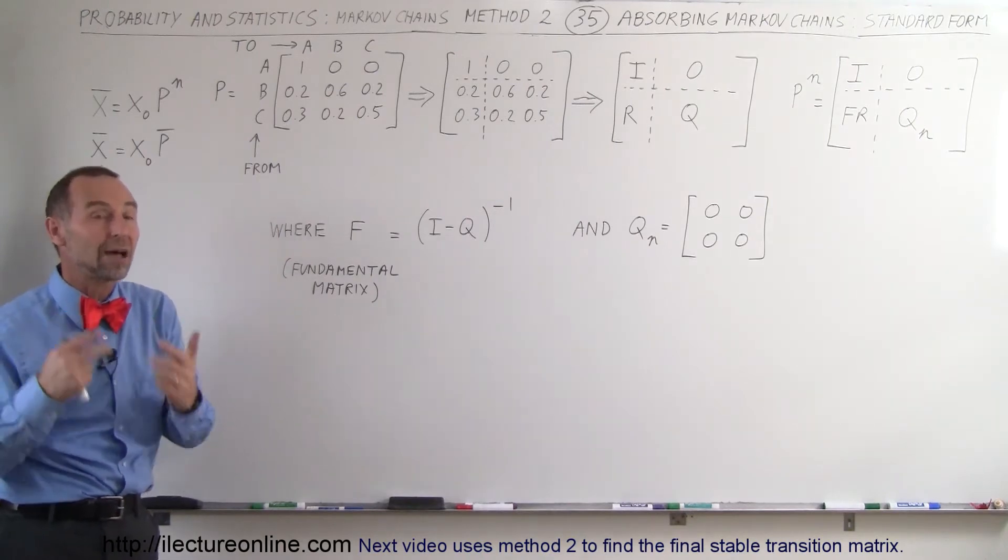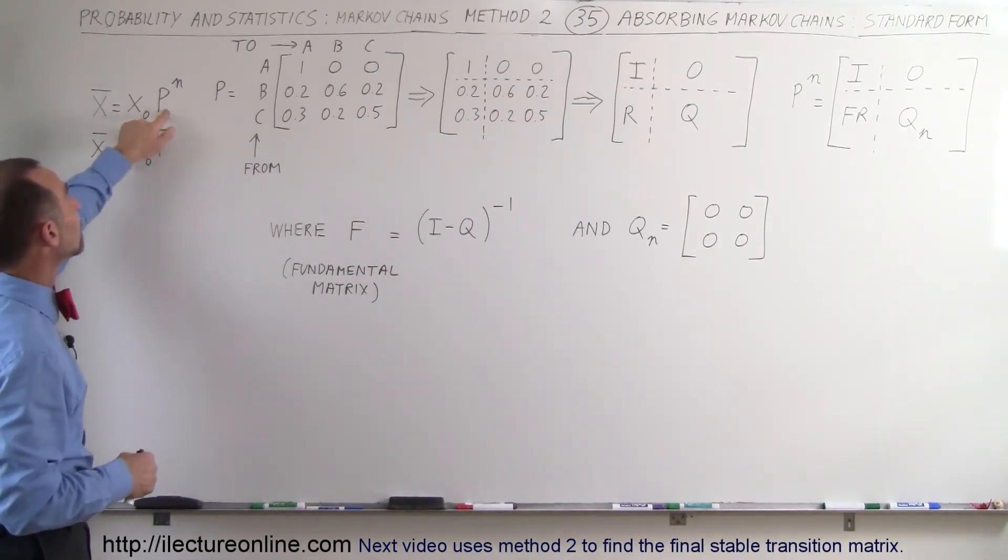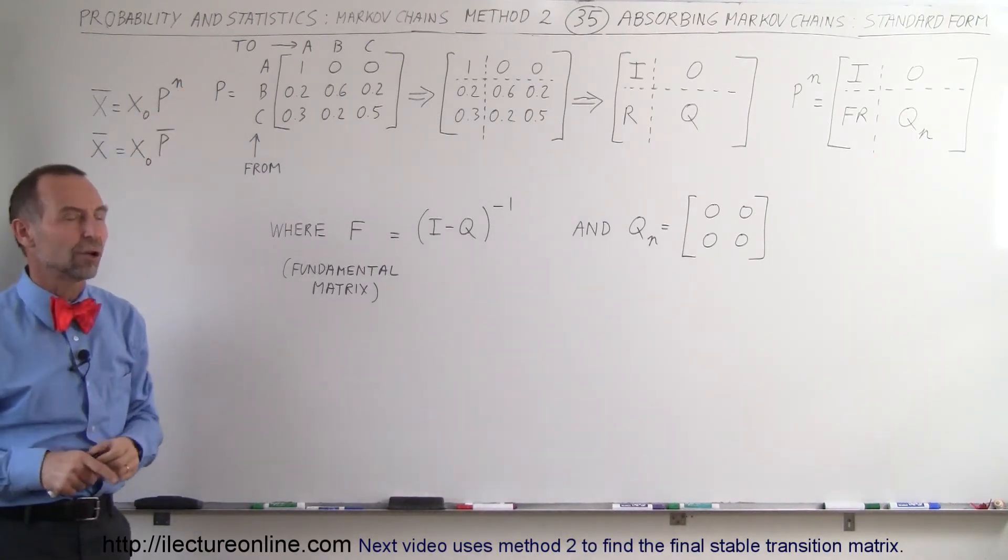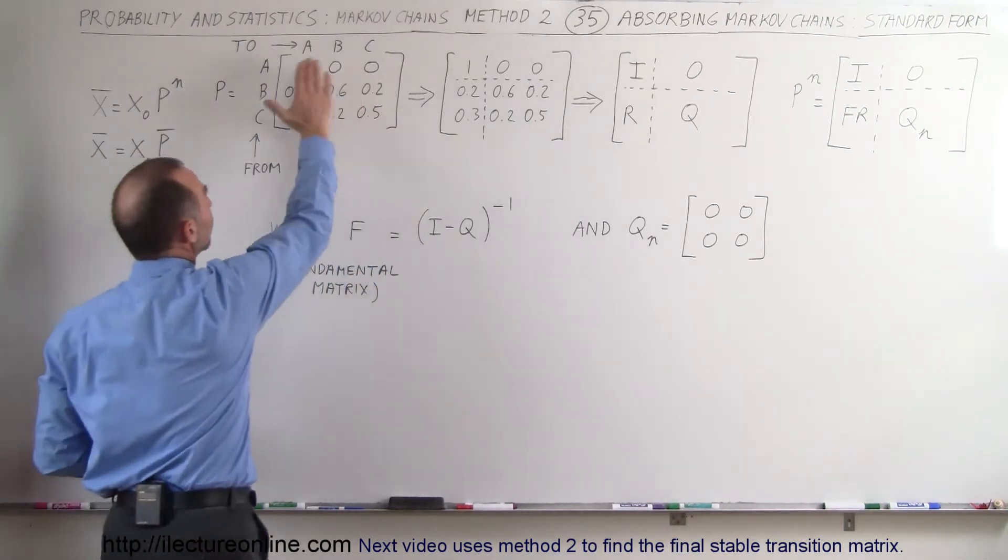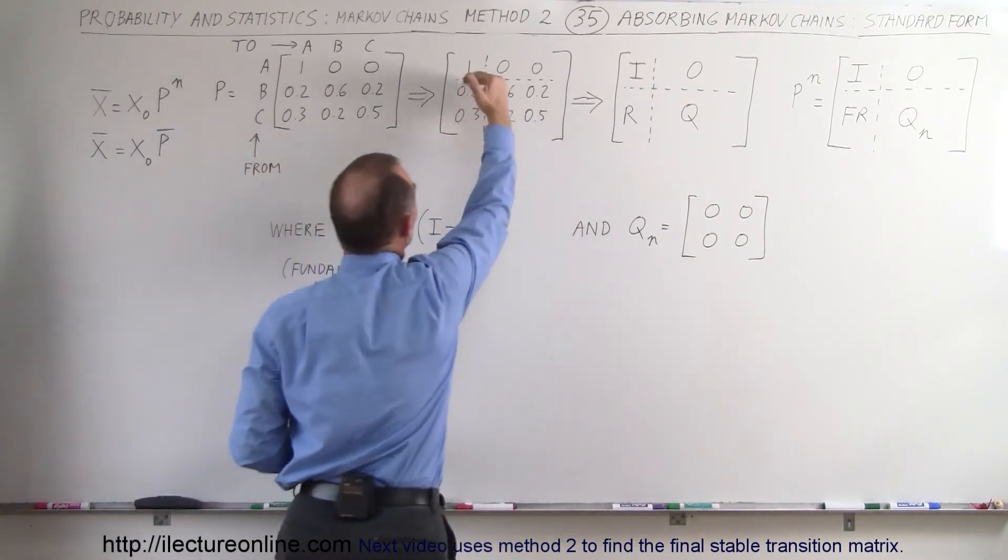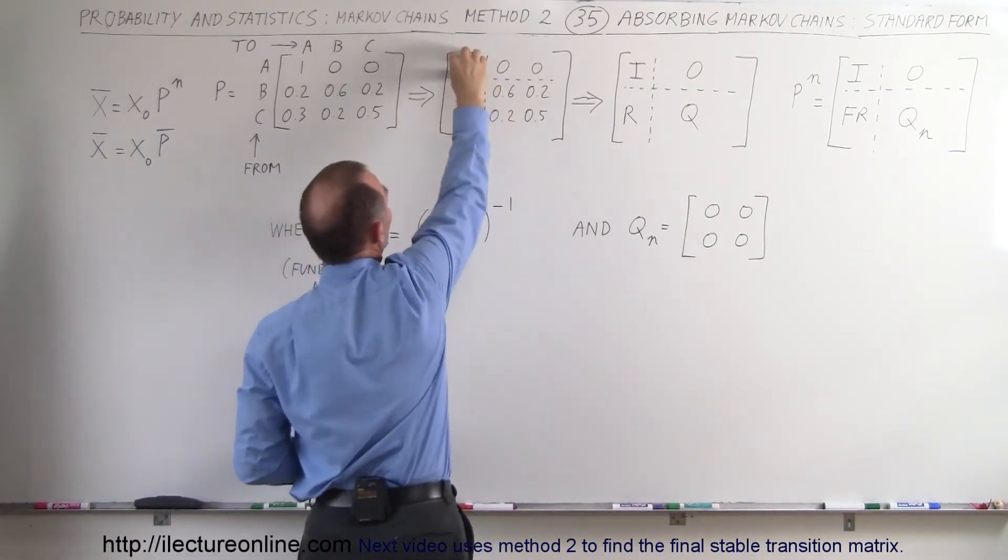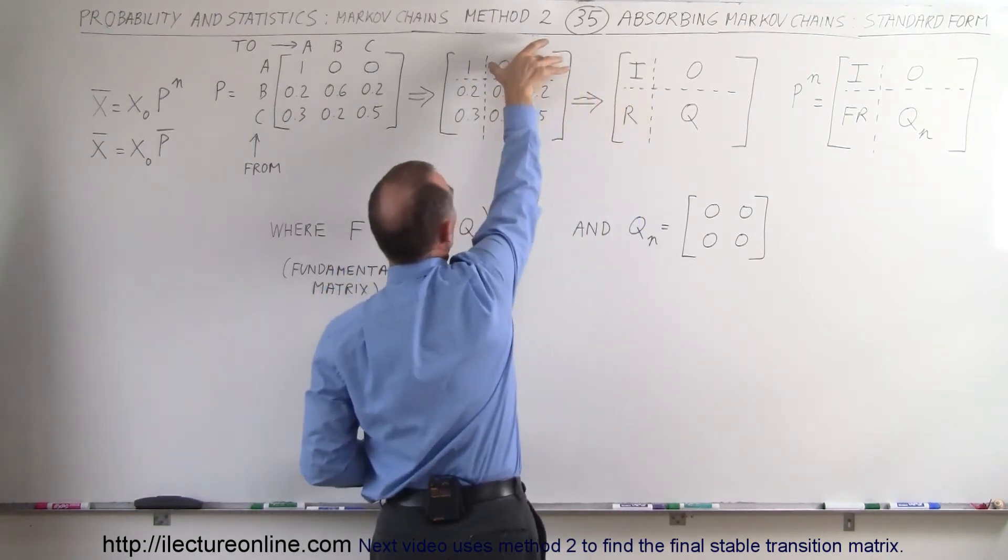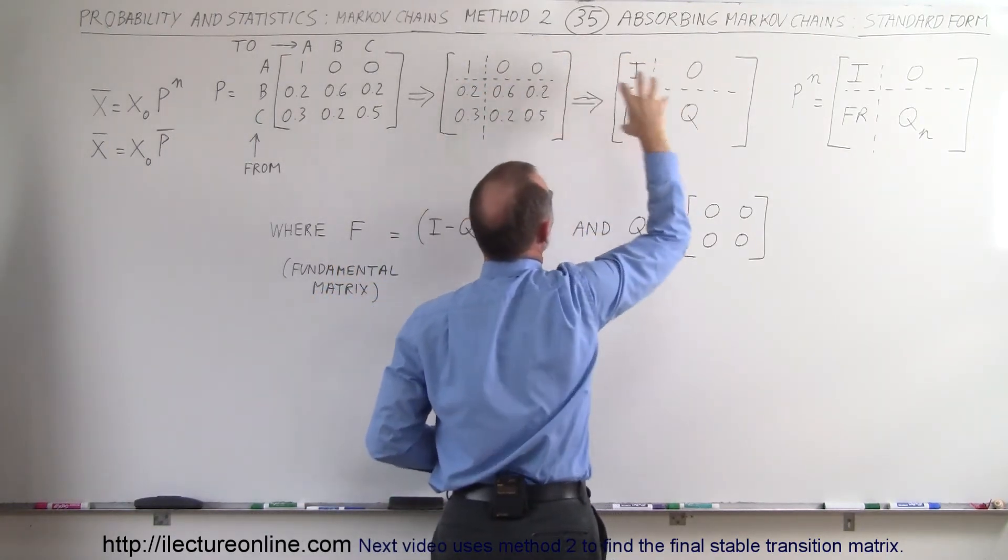Here we're going to show you how to find the stable transition matrix, or the transition matrix raised to the n power, where n becomes a very large number. We take the transition matrix and divide it into four quadrants. In the upper left we have the identity matrix, here we have the R matrix, there we have the zero matrix, and there we have the Q matrix.